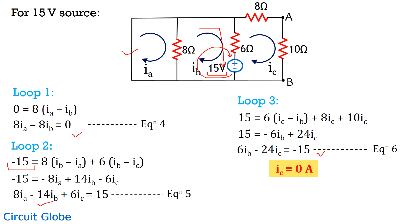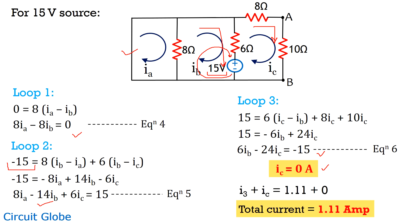Solving these equations, we get IC = 0 amperes. Now that we have the current through the 10-ohm resistance from each individual source, we add both currents to get the overall current: 1.11 + 0 = 1.11 amperes. This is the expected response of the circuit using superposition theorem.